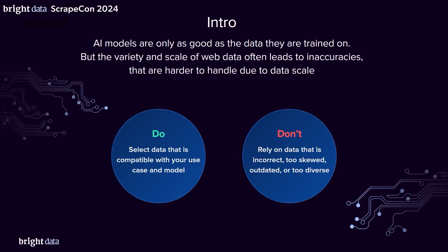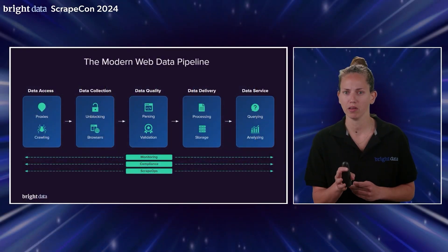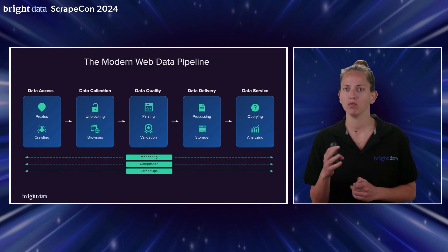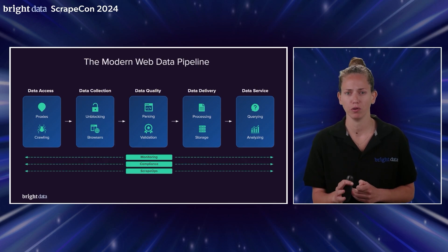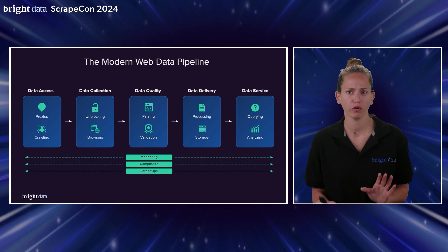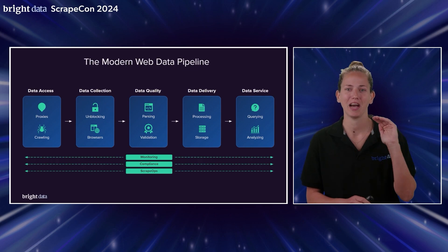Now let's look at the web data pipeline. Using web data effectively to train AI models requires us to understand the intricacies of the web data pipeline — how the data is accessed, how it is collected, how it is validated, and how it is delivered. Each of these can easily become an operational bottleneck or introduce inaccuracy, or more often than not, do both. By buying and using ready-made datasets, you can reduce collection-related risks and headaches and deliver high-volume, high-quality, diverse data on demand without worrying about building and maintaining a full-blown web data pipeline. All you need to worry about is how to select the right data and how to ensure its accuracy.